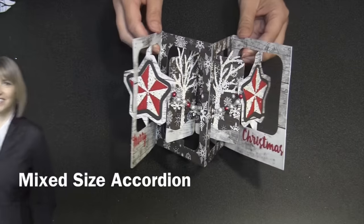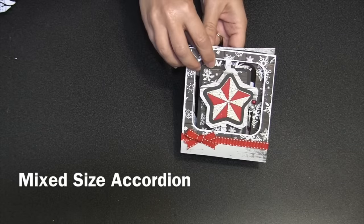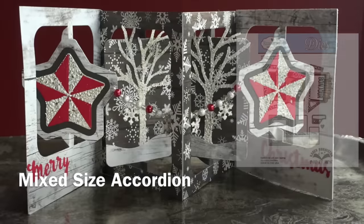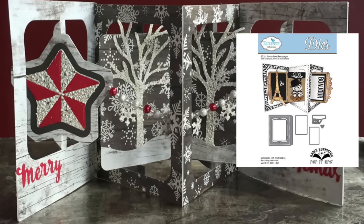A mixed size accordion, which means the die sizes are different. The star accordion is a square outer shape and the rectangle is a rectangular outer shape and I'm going to mix those together.